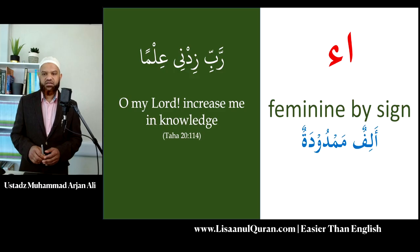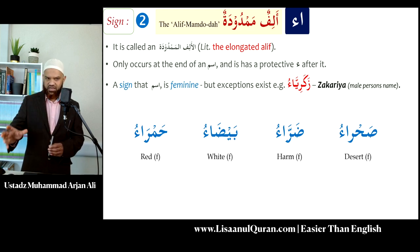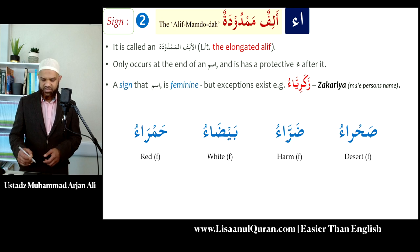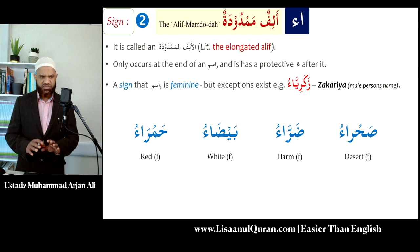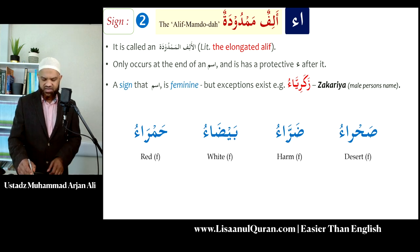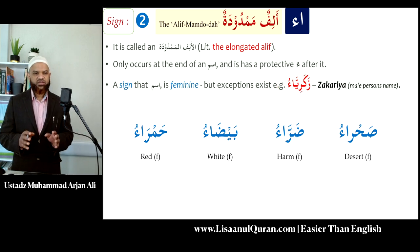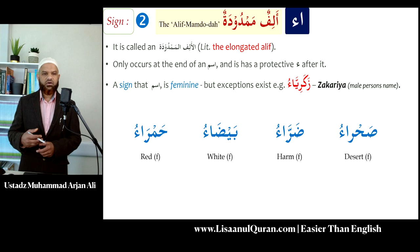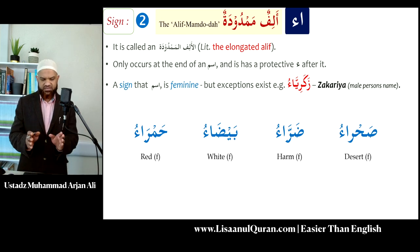The second sign indicating feminine is alif mamdooda - an elongated alif written as alif followed by a hamza (protective hamza) at the end of the word. We will study these categories in detail at the intermediate level. Examples include: sahra'u (desert), darra'u, bayda'u, hamra'u. For instance, colours in Arabic have this feminine ending. Note that some words with alif mamdooda, like the name Zakariya, refer to male persons and are therefore treated as masculine.